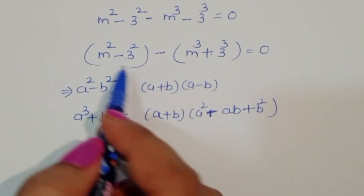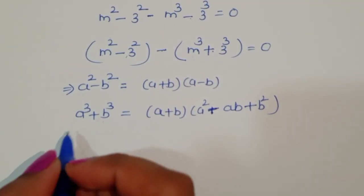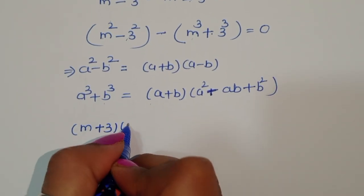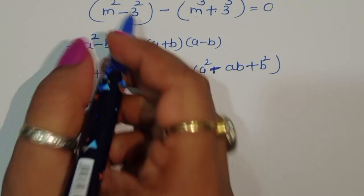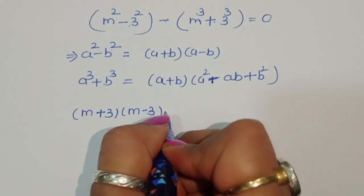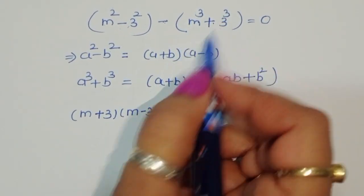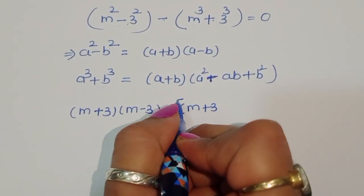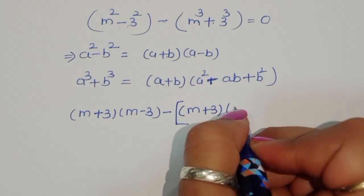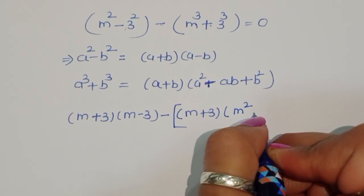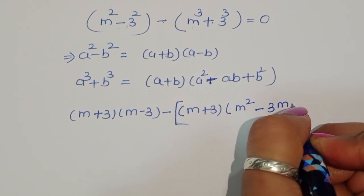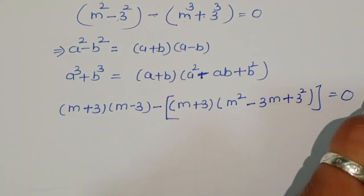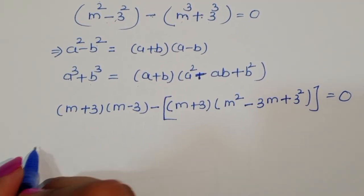Applying the formulas: m squared minus 3 squared becomes (m plus 3)(m minus 3). And minus m cubed plus 3 cubed becomes minus (m plus 3)(m squared minus 3m plus 9) equals 0.